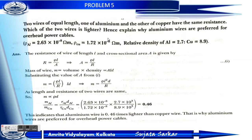We know that resistance R equals rho L by A. Mass M equals volume into density equals A L D. So we can derive: M equals rho L squared D by R.